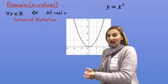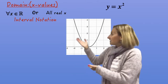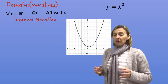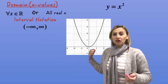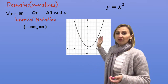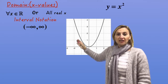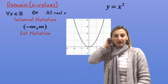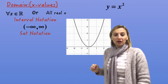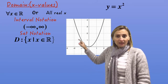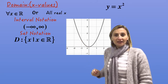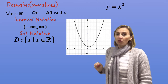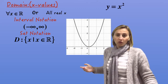With interval notation, all we need to do is write down where it's going from and to. In this case it's from minus infinity to infinity. And what type of brackets do we need around it? The round ones, because we don't want to include those values. And then we do set notation with the curly brackets: we have the domain D, colon, curly brackets, values of x such that — vertical line — x is an element of all the real numbers, because that means all the x values.